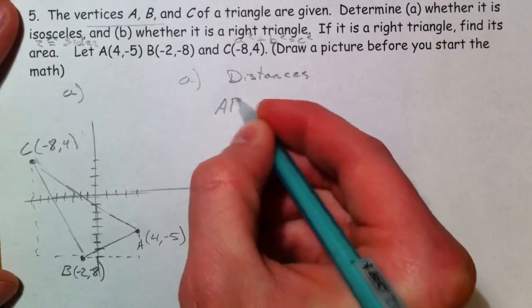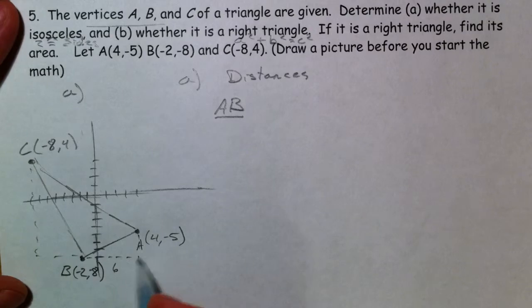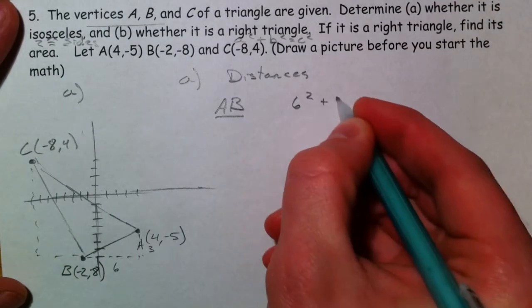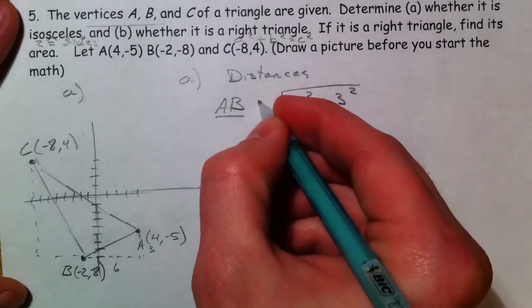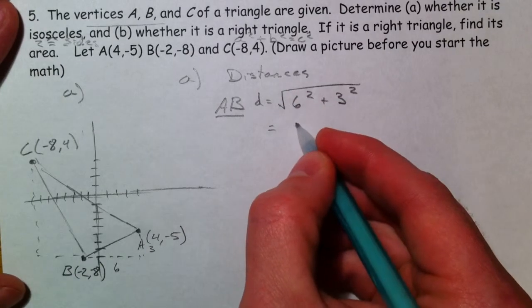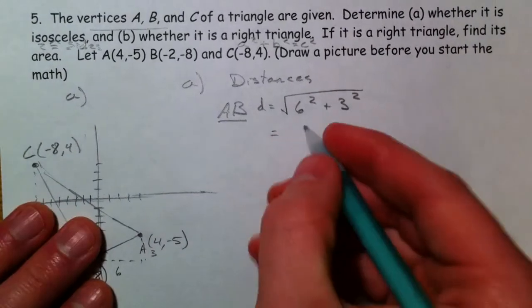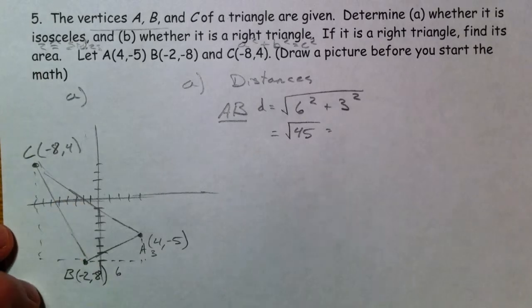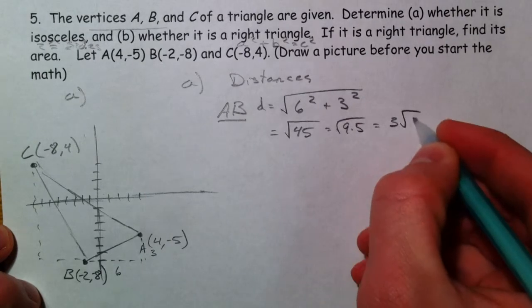To find AB first. To get from -2 to 4, that's 6. And to get from -8 to -5, that's 3. So that's 6 squared plus 3 squared, which is 36 plus 9, equals 45. Square root of 45, which is 9 times 5, equals 3 root 5.